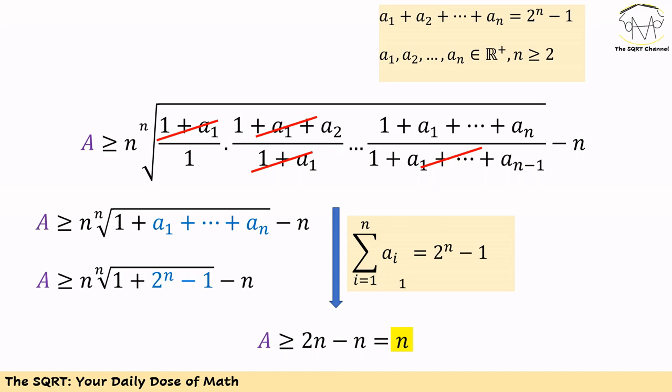Now remember we had a1 plus a2 plus a3 and so on up to an equals 2 to the power of n minus 1. So on the left-hand side we have the expression that we want, and on the right-hand side we have n times the nth root of 2 to the power of n minus 1 plus 1, and then minus n again. We can cancel out the nth root with 2 to the power of n, then we have 2 times n minus n, which is actually n. So the minimum possible value that our expression can take is n, and that's our answer.